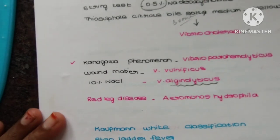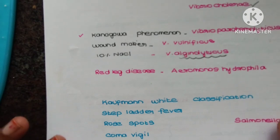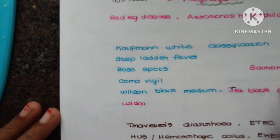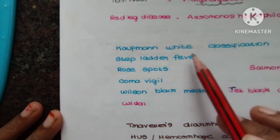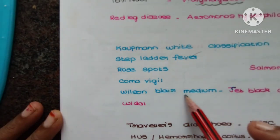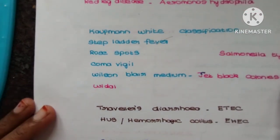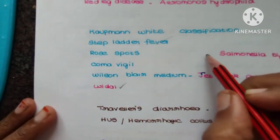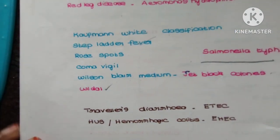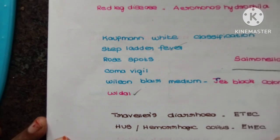Next: red leg disease is caused by Aeromonas hydrophila. For Salmonella typhi: Kauffmann-White classification, step-ladder fever, rose spots, coma vigil, selective medium is Wilson-Blair medium with jet-black colonies. If you come across rose spots and step-ladder fever, the term is only used for Salmonella typhi.